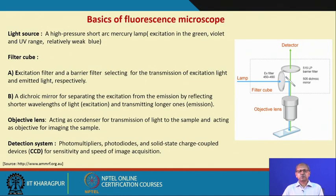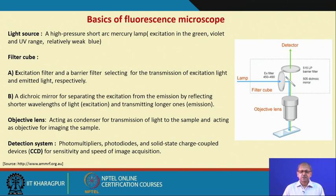What type of microscopy shall we use for the microfluidic system? First, we discuss wide-field fluorescence microscopy and its components. The light source is a high-pressure short-arc mercury lamp, which gives excitation in green, violet, and UV range with relatively weak blue. Then there is the filter cube, which consists of an excitation filter, a dichroic mirror, and a barrier filter.